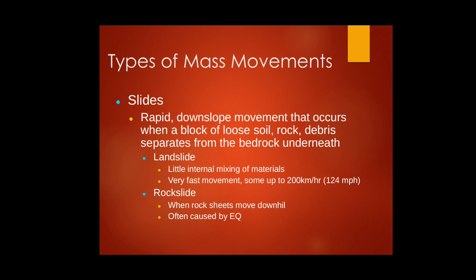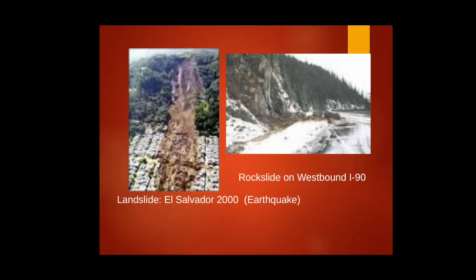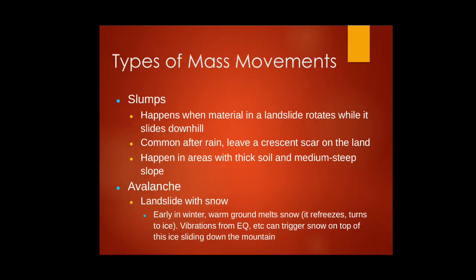Slides are rapid downslope movements where a block of loose soil or rock debris separates from the bedrock underneath, with very little internal mixing of material — speeds can reach 200 km/h. Rock slides occur when rock sheets move downhill, often triggered by earthquakes. The left image shows the El Salvador landslide triggered by an earthquake in the year 2000, and the right image shows a rock slide in the USA.